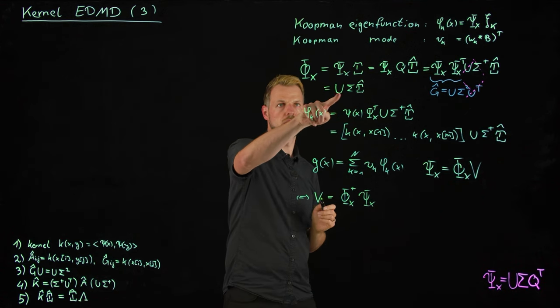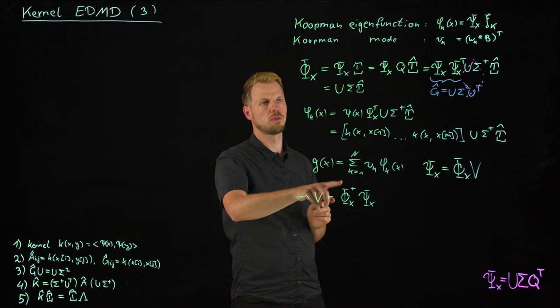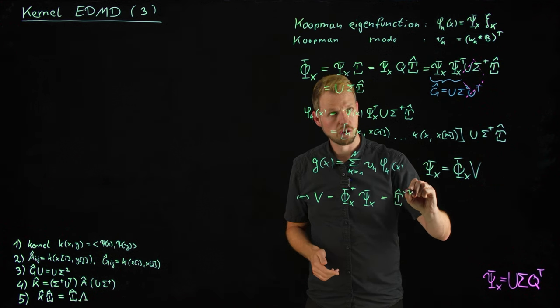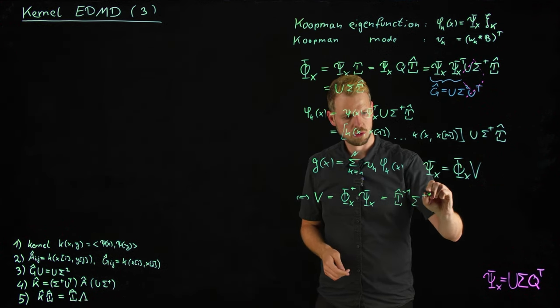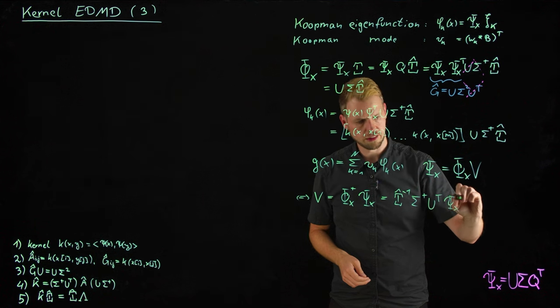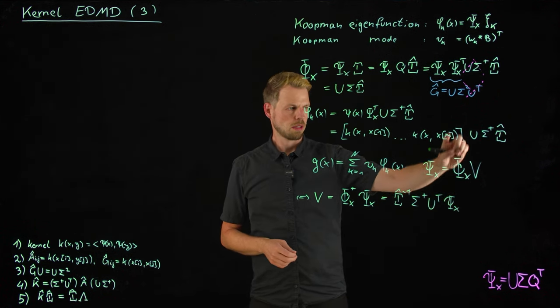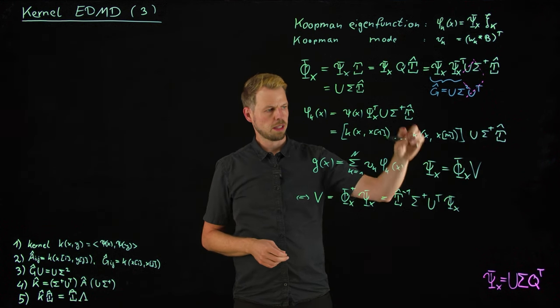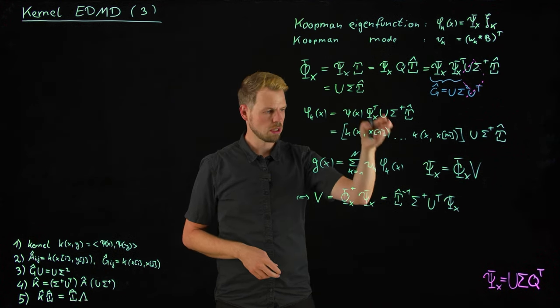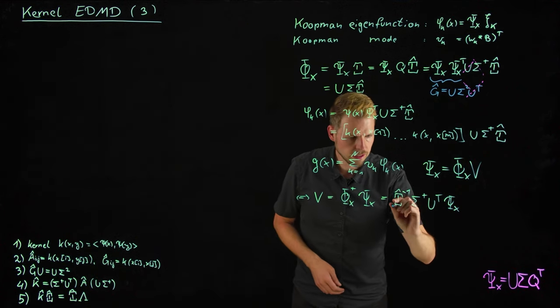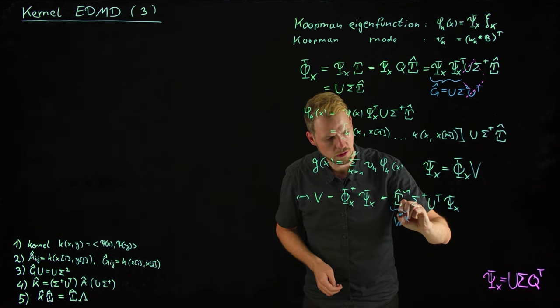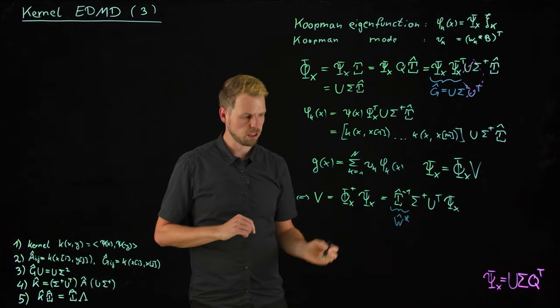So this is a basis for this g function by taking the eigenfunctions and then multiplying with the Koopman mode. The matrix version of this and then c allows me to reconstruct the g function. And what I can do now is I can use this to construct the Koopman modes by simply multiplying from the left with the pseudo inverse. So this gives me the pseudo inverse of the eigenfunction matrix with my feature matrix. And what I can do now is use this result to compute this inverse efficiently by inverting independently and swapping the order.